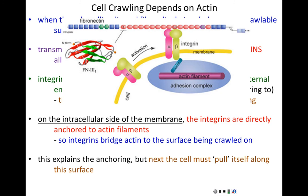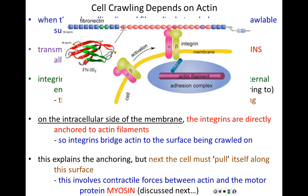Integrins bridge actin to the surface the cell is crawling on — that explains step two of cell crawling. The anchoring is also actin dependent, but not in bundles and not in sheets as we saw for reaching out via lamellipodia and filopodia. Step three is that the cell must flow forward, fill in the advancing front, and pull itself along the surface. This involves contractile forces between actin and the motor protein myosin.